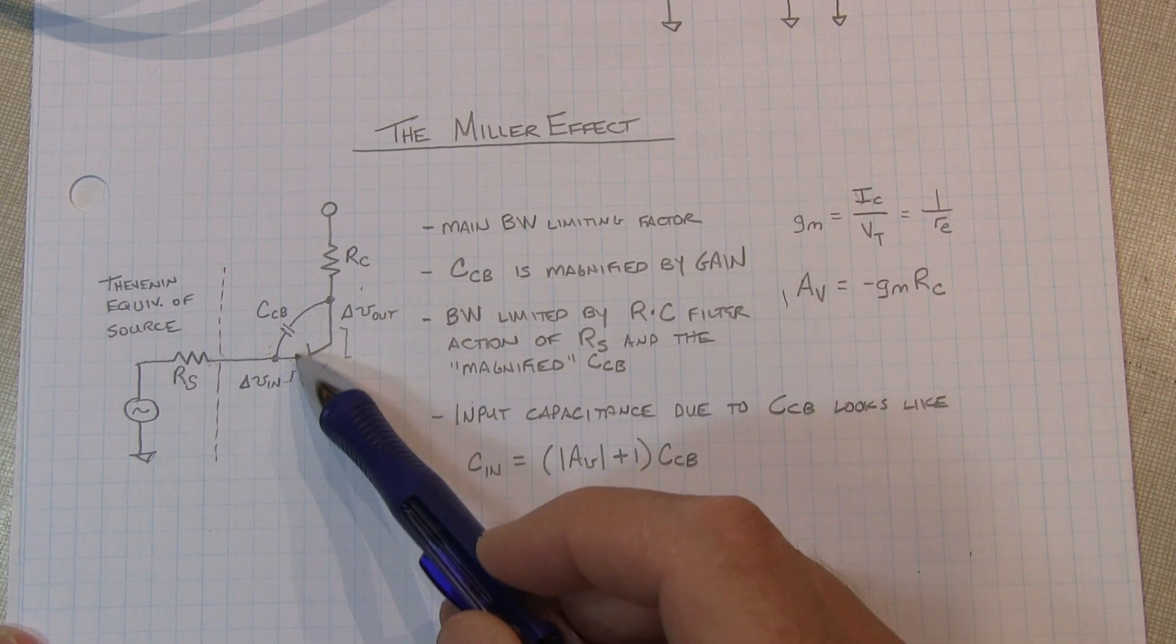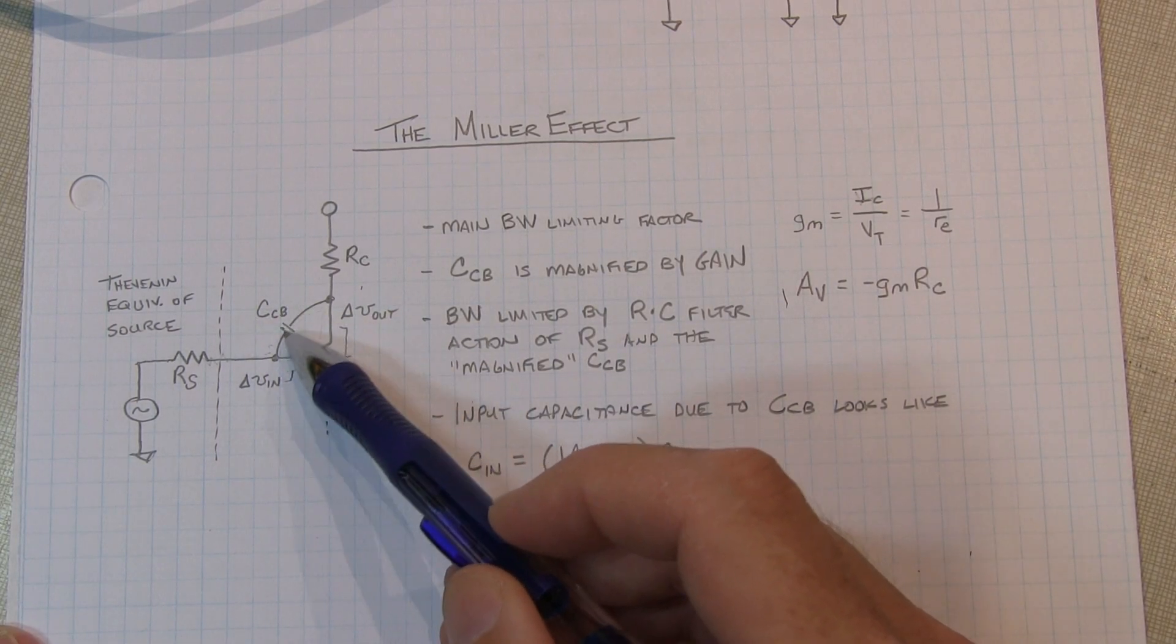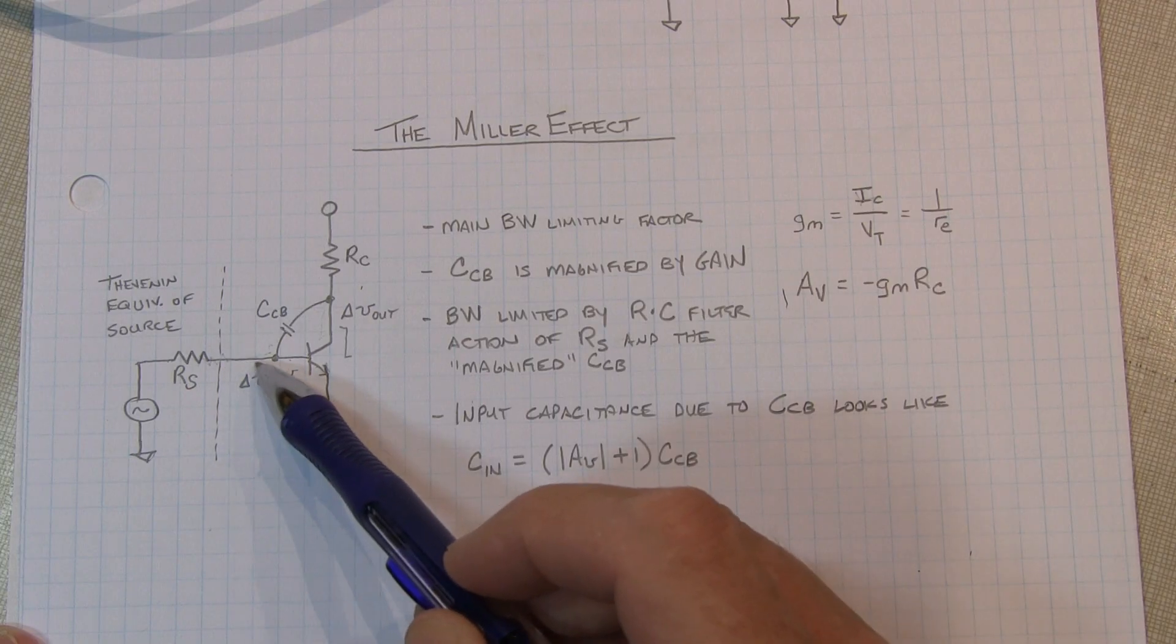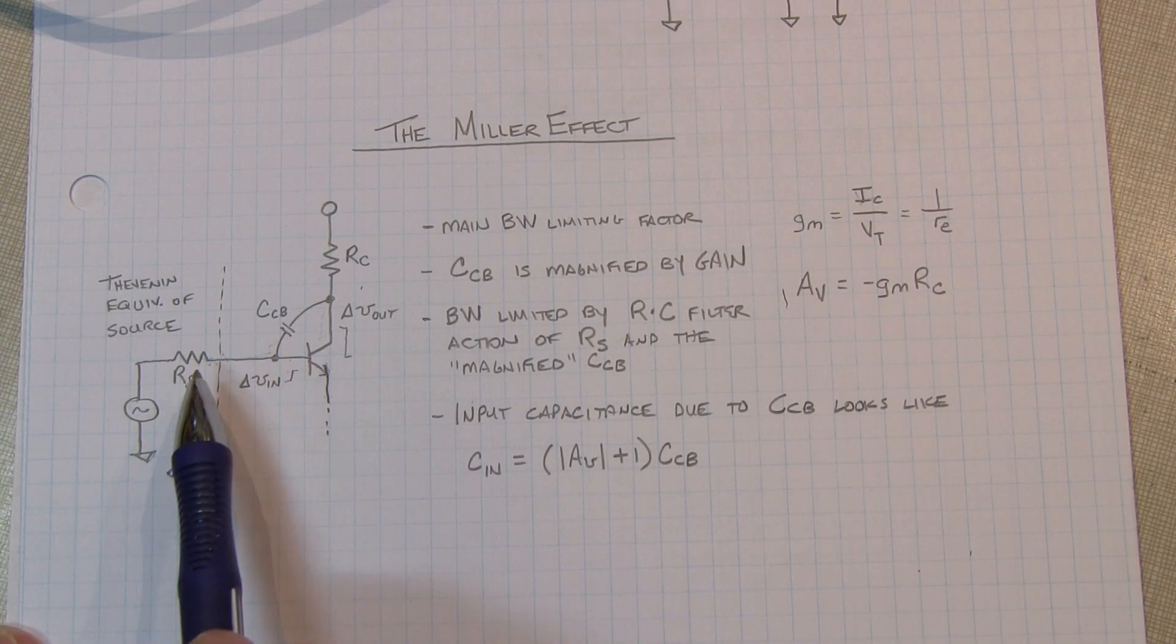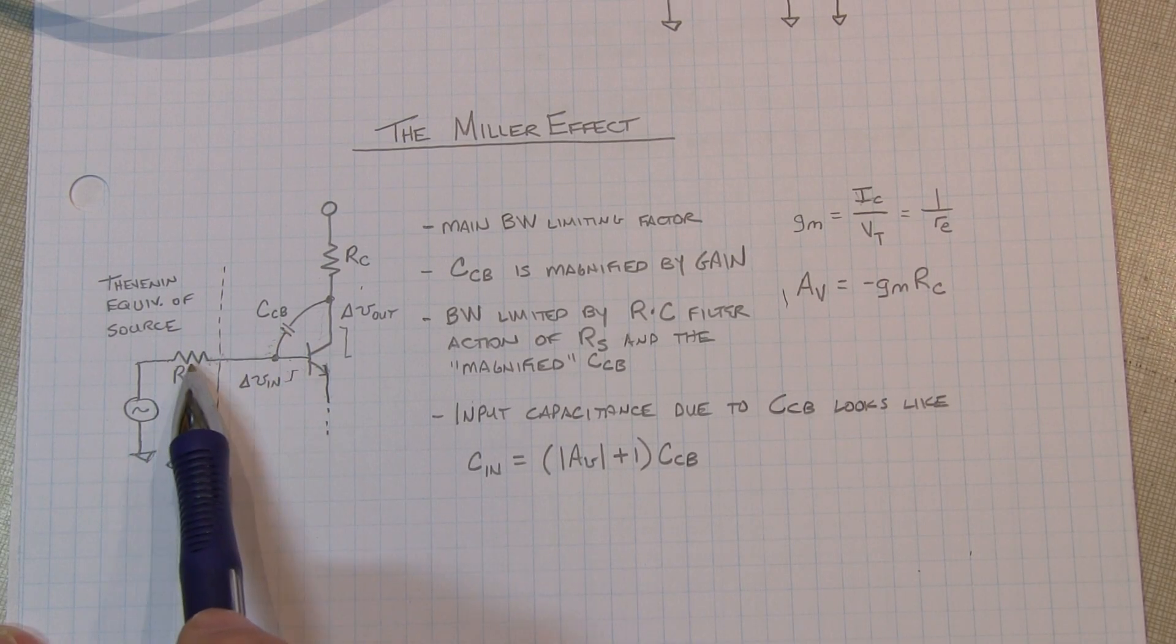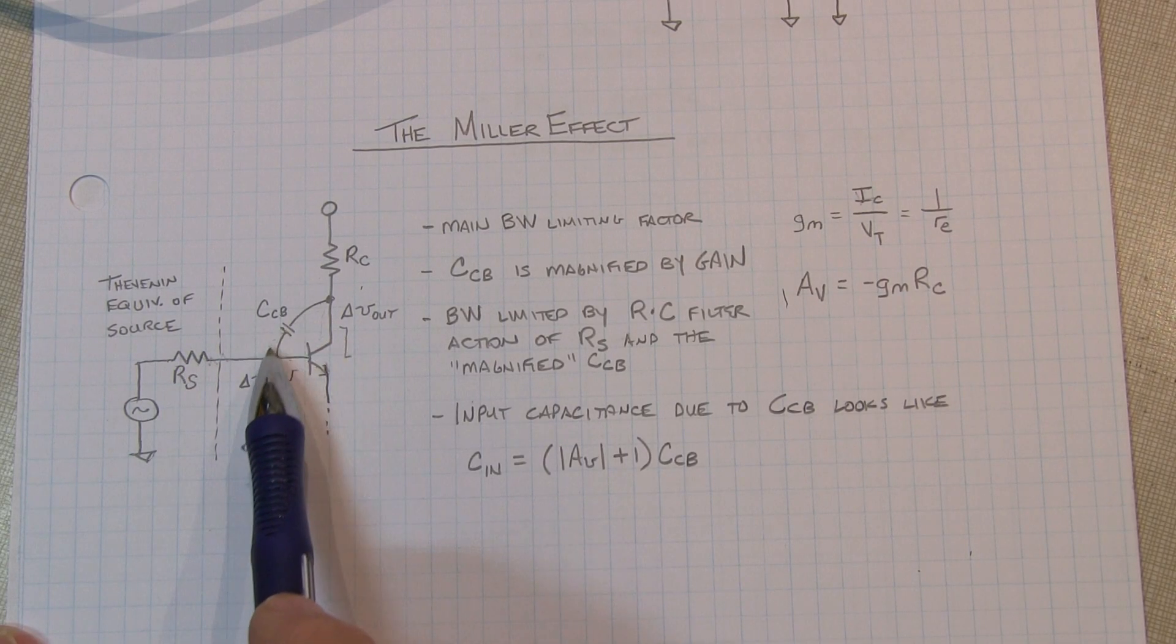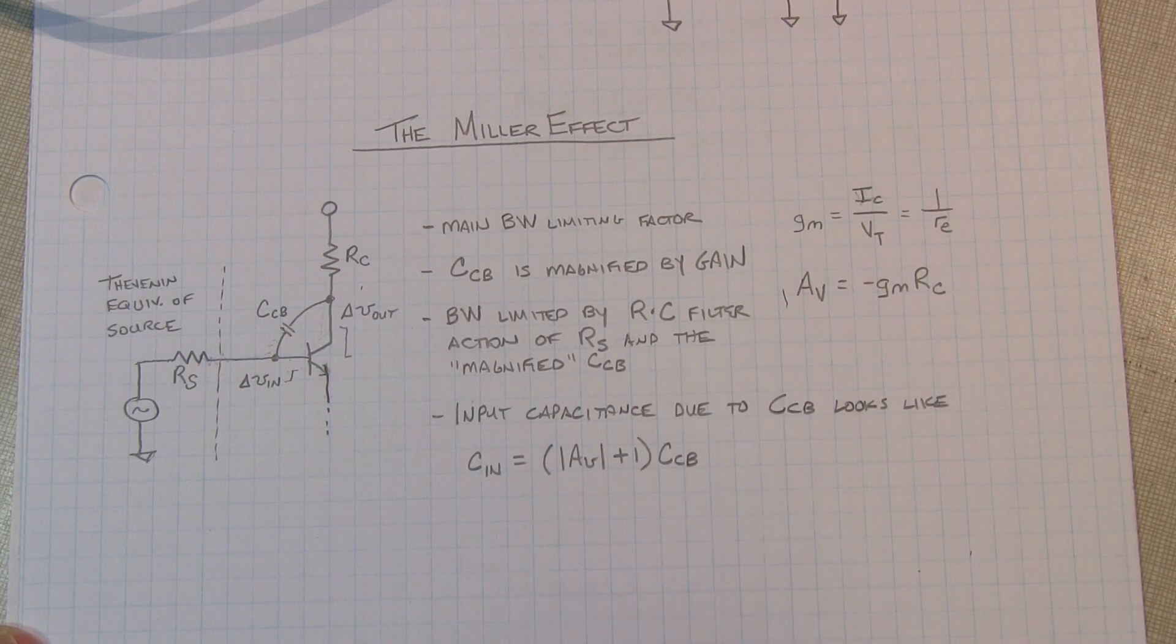So if you have this transistor, this amplifier set up for a gain of 100, this collector base capacitor from an input standpoint looks about 100 times larger than it really is. And therefore, the RC filter action, if you will, of the source impedance and that collector base capacitance can essentially roll the gain off very quickly.